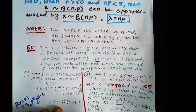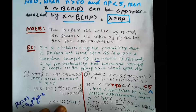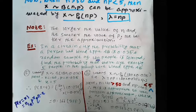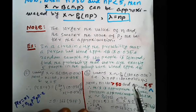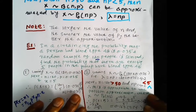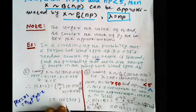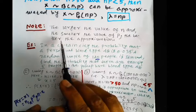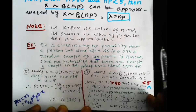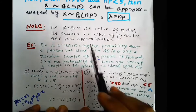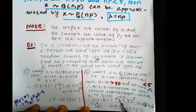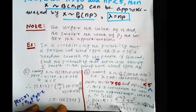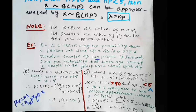Comparing the two answers, they are the same up to two decimal places, differing only slightly at the third decimal place. Although not exactly equal, they are very close. The answers become even closer to each other as n becomes larger and p becomes smaller — that is what determines the quality of the approximation.